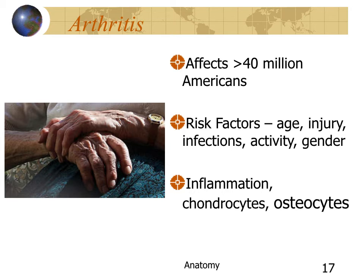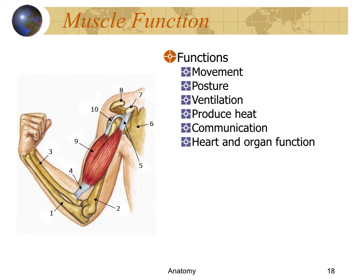The major joint disorder is arthritis, a huge problem affecting as many as 40 million Americans. Osteoarthritis is primarily an age/injury/overuse condition where cartilage degenerates and is replaced by bone and inflammation. Rheumatoid arthritis is generated by an autoimmune response, and there is also infectious arthritis. In every case, inflammation occurs, bone starts replacing cartilage, and the joint becomes painful, swollen, and difficult to move.